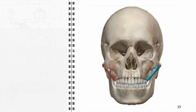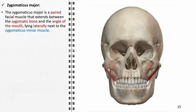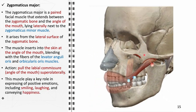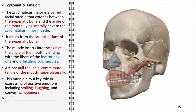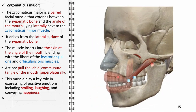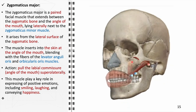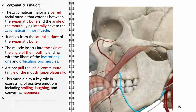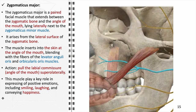The zygomaticus major, a paired muscle extending between the zygomatic bone and the angle of the mouth, lies laterally next to the zygomaticus minor. Originating from the lateral surface of the zygomatic bone, it inserts into the skin at the angle of the mouth, blending with the levator anguli oris and orbicularis oris. Its primary action is to pull the labial commissure supralaterally, elevating the mouth's corners and expressing positive emotions such as smiling and laughing. It receives blood supply from the facial artery and nerve supply from the zygomatic branch of the facial nerve.